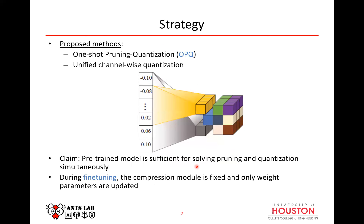To overcome these problems, this paper introduces OPQ — one-shot pruning and quantization. As part of OPQ, they introduce unified channel quantization, which assigns a common unified quantization value to the entire channel, reducing computational burden while achieving the performance of channel-wise quantization. The paper claims that a pre-trained model is sufficient to solve both pruning and quantization simultaneously. Compression happens at the fine-tuning stage, keeping all compression parameters fixed while updating only the weight parameters based on values learned from the pre-trained model.